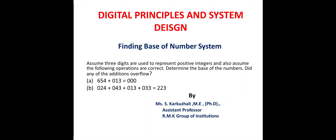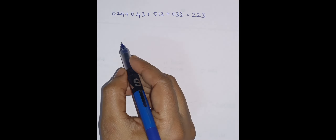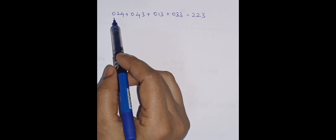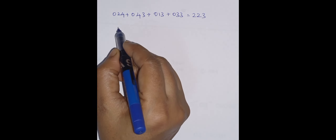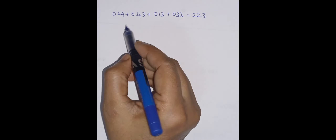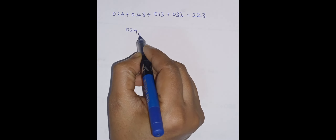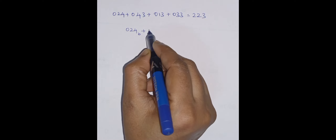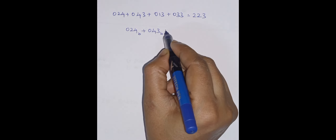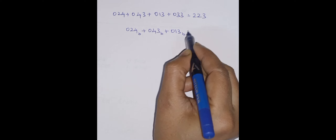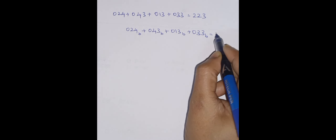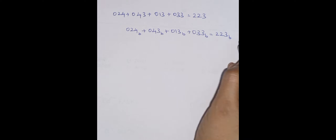Good morning students. In the last video we discussed the first problem. Now we are going to find the base of this number system. We don't know the base, but when we add we get 223. So: 024 base b, plus 043 base b, plus 013 base b, plus 033 base b equals 223 base b.